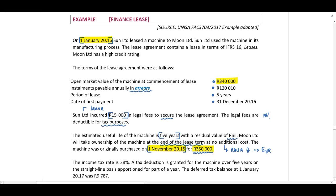The income tax rate is 28% and a tax deduction is granted on the machine over 5 years on a straight-line basis, with a portion for part of the year. This is important for our deferred tax calculation, where we need to include our carrying amount, our tax base, the temporary difference, and deferred tax.